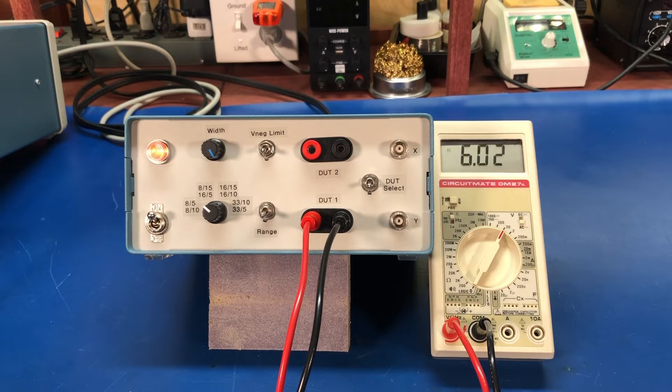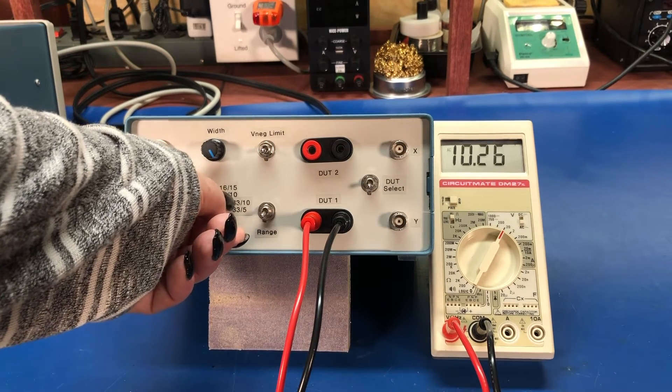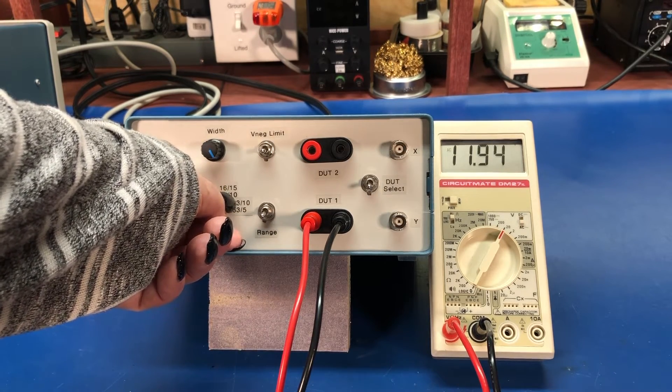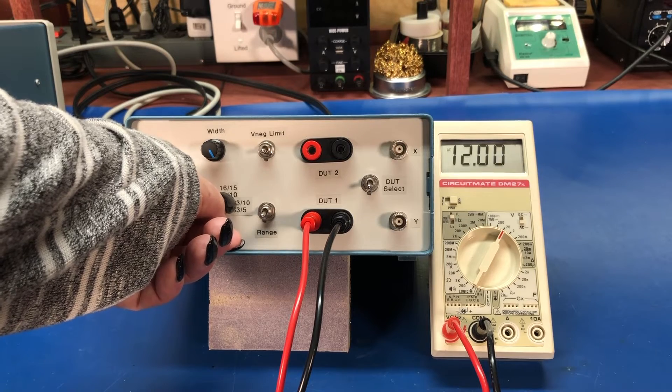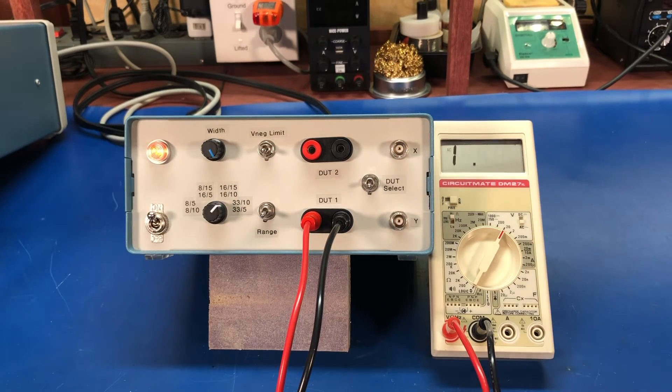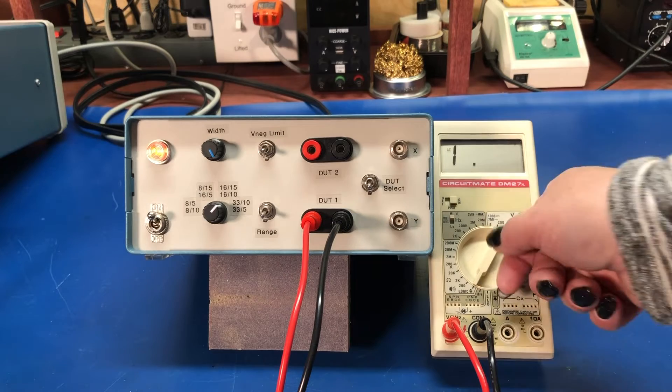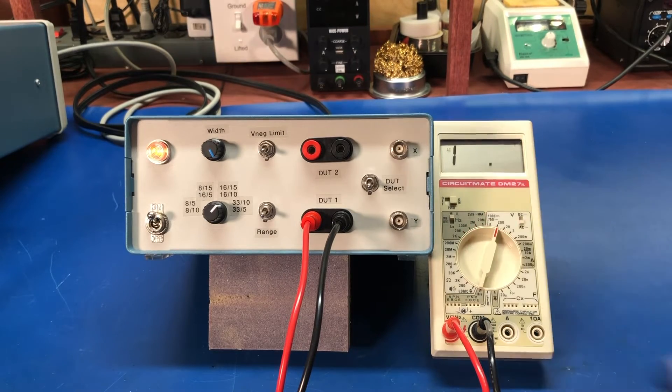That 8 volts is the peak-to-peak swing as opposed to the RMS AC voltage. But if we look here the first setting we can see we're getting 6 volts. Next one we've got 12. This is 12. And then the next is 24 volts.